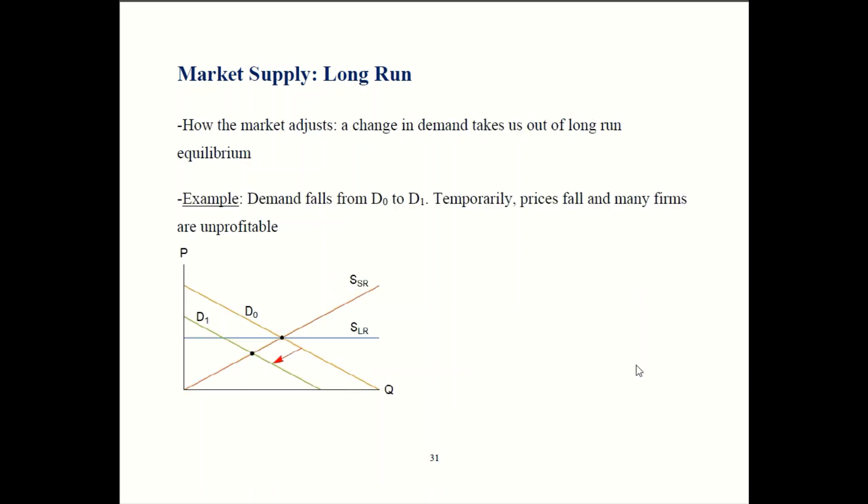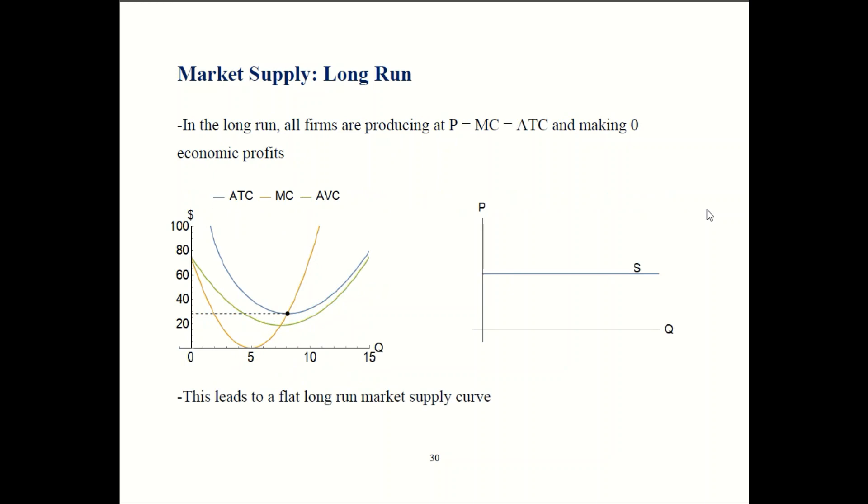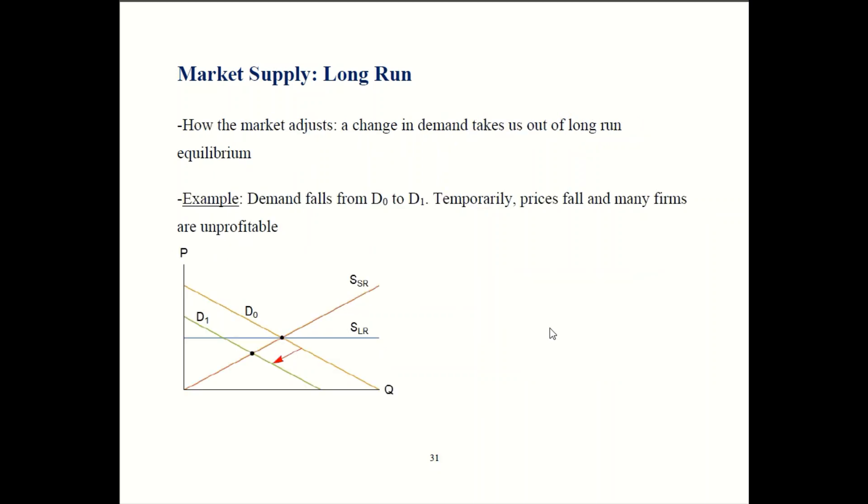Now supply we saw could slope upwards in the short run like it did back over here. In the long run though it's flat because all firms are producing at the same point. So there's a difference between short run supply and long run supply.